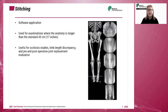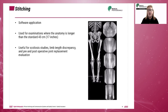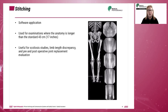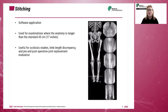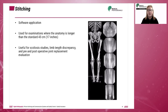Scoliosis and limb length studies often must be acquired using multiple exposures on separate image receptors. Once the multiple acquired images are processed in the correct order, stitching software allows the radiographer to join separate processed images into a single image format.